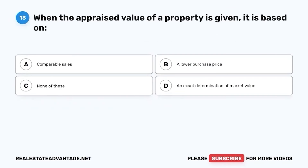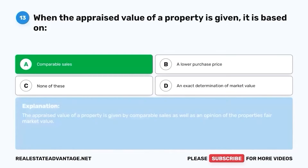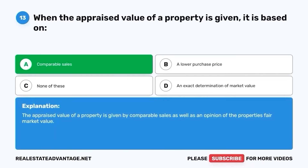Question 13. When the appraised value of a property is given, it is based on: A. Comparable sales. B. A lower purchase price. C. None of these. D. An exact determination of market value. The correct answer is A. Comparable sales. The appraised value of a property is given by comparable sales, as well as an opinion of the property's fair market value.